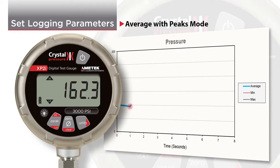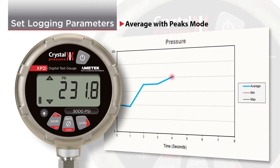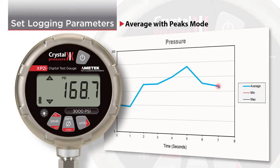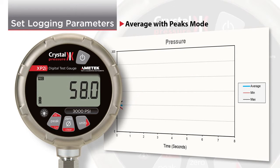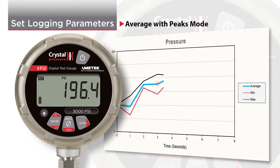Average with peaks will record the average between the logging intervals, just like average mode, but it also records the highest and the lowest readings that occur between logging intervals.